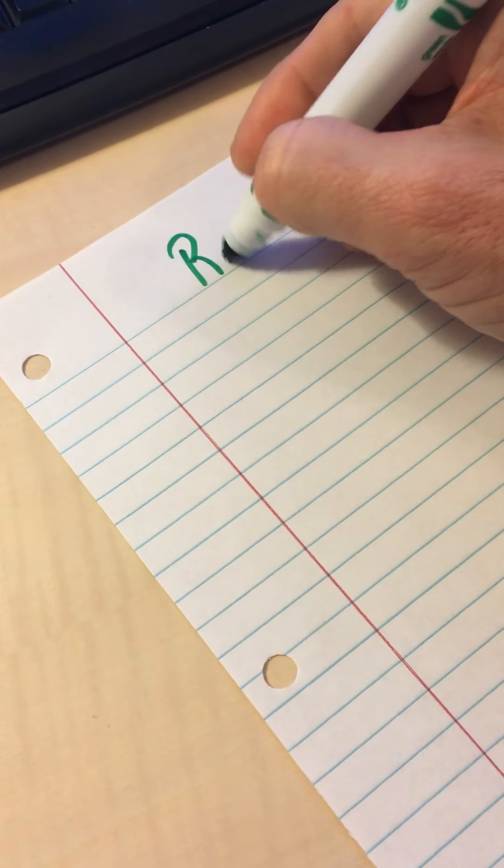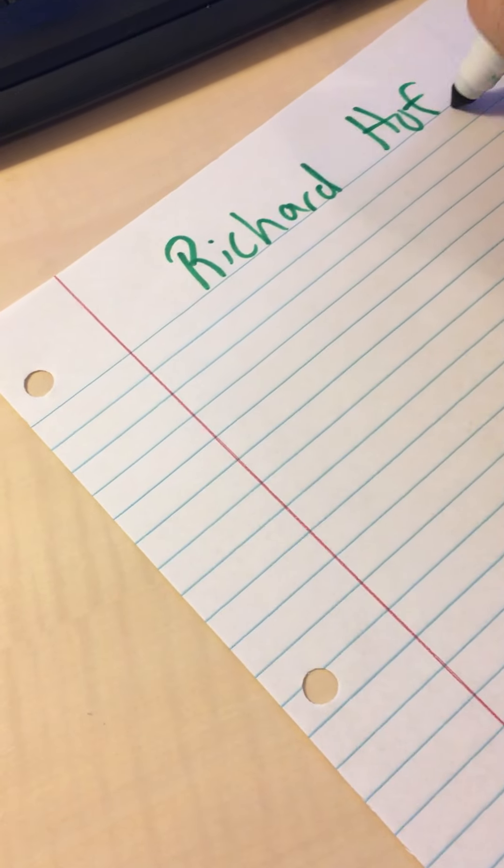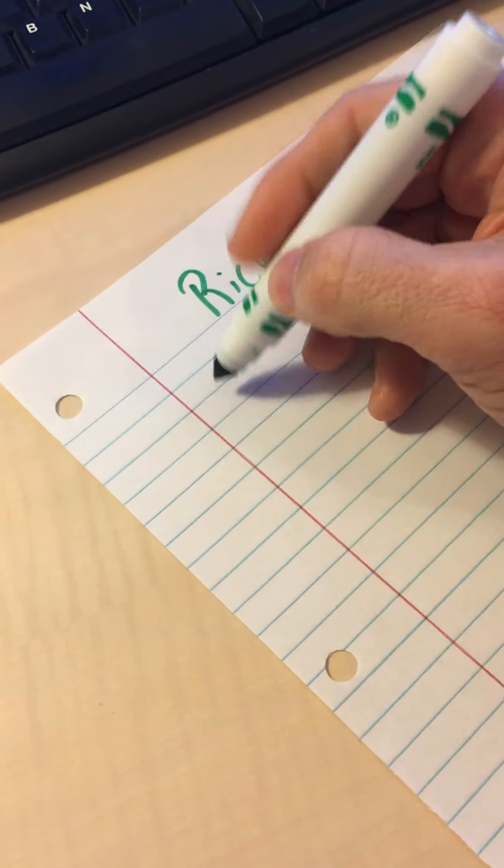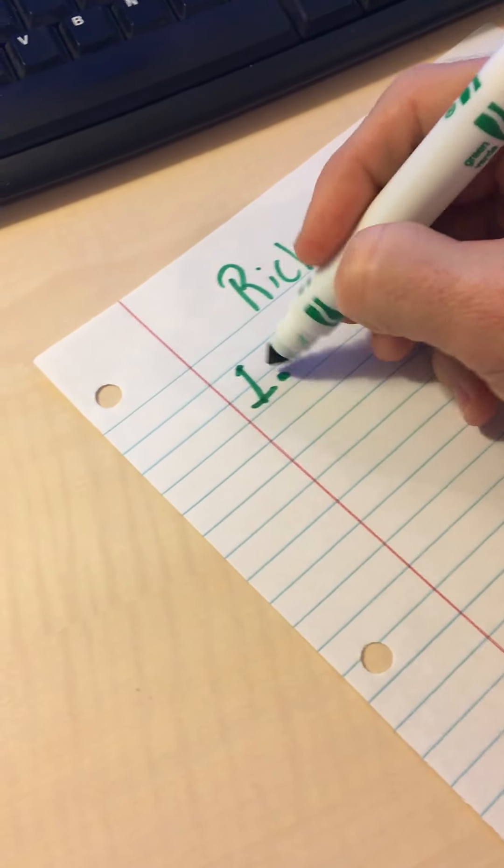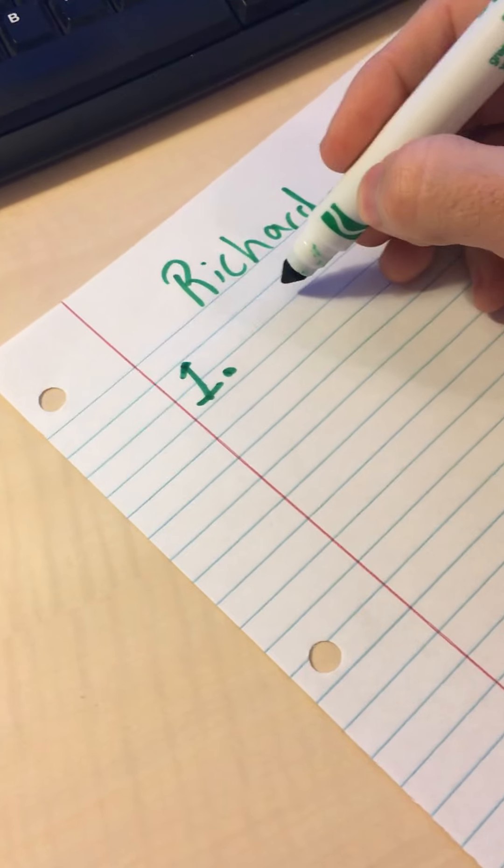First step is write down your name so I know who you are. And say this is problem number one for the assignment. Put a one. Then write down the problem.